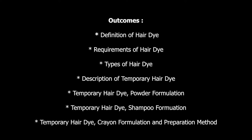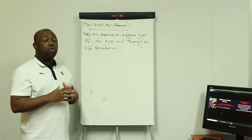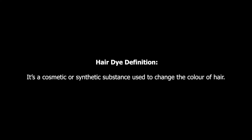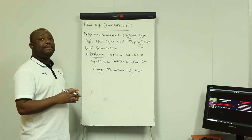Our last point is where we're going to give out the temporary hair dye crayon formulation, and we're also going to give out the preparation method. So let's start by defining what hair dye is. Hair dye is a cosmetic or synthetic substance used to change the color of hair — that's the simplest definition.